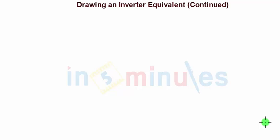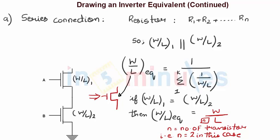Welcome to 'In 5 Minutes.' The agenda of this clip is to continue the discussion of drawing an inverter equivalent circuit. In the previous clip we saw how to draw an equivalent circuit when transistors are connected in series (CDS). A quick recap: when resistances are connected in series they are all added up, because resistance and current are inversely proportional, and current is directly proportional to W/L, so resistance is inversely proportional to W/L. The series phenomena for resistors when connected in series is equivalent to a parallel phenomena for W/L.